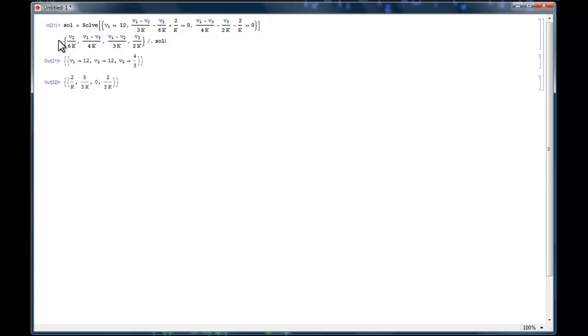And then in the second line of code here, what has been done is all of the branch currents have been written in. And then this is saying to assign the values that are obtained in sol, or that are contained in sol, and apply them to the variables inside of these brackets. So when you run the code, it tells you what V1, V2, and V3 are. And then finally it plugs V1, V2, and V3 into here and spits out the values of the currents. So I hope that's helpful.